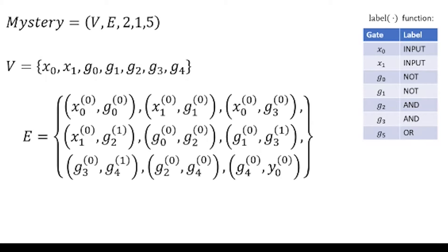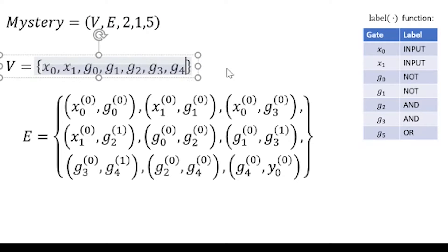We're going to go through an example execution without the benefit of a picture, just to make sure that we understand formally what's going on as far as circuit execution goes with our formal representation. Here we have a circuit described using this graph-like model where we have our set of vertices, our set of edges, two input bits, one output bit, and five gates total.